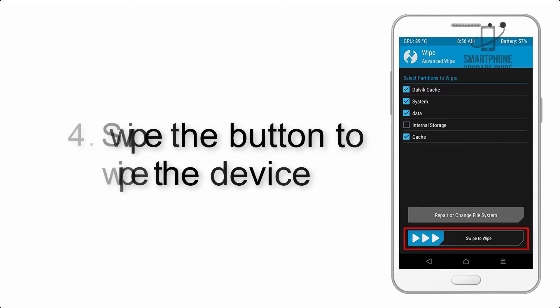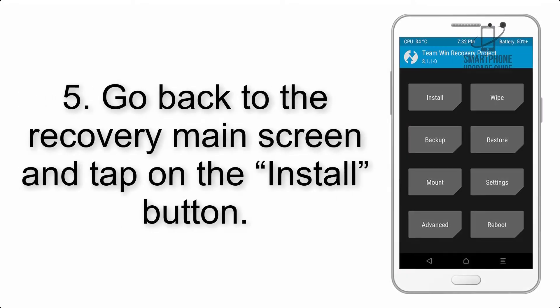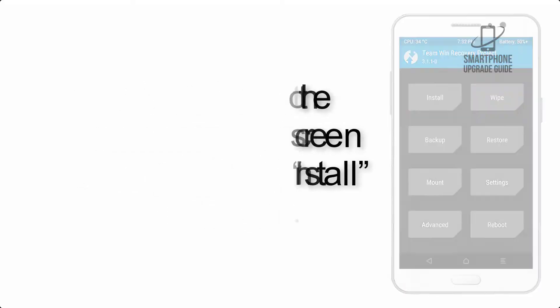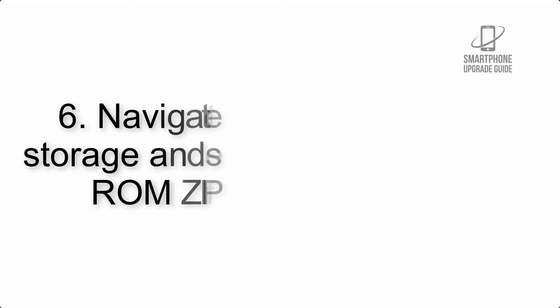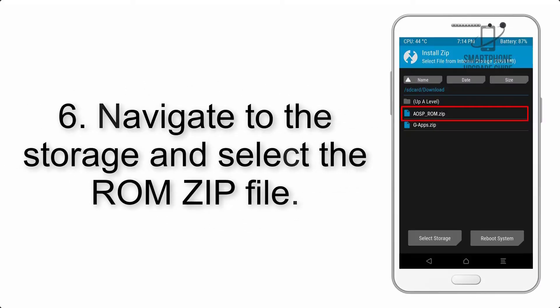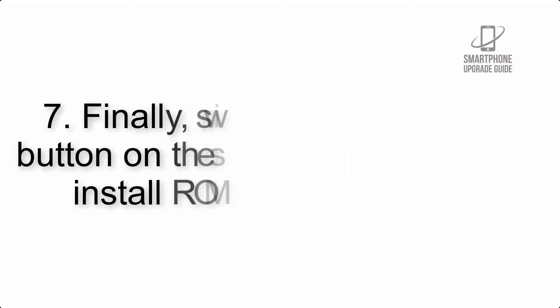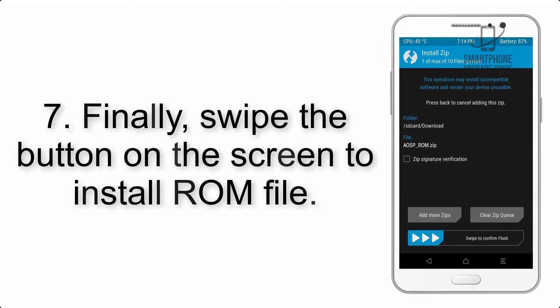Step 4: swipe the button to wipe the device. Step 5: go back to the recovery main screen and tap on the Install button. Step 6: navigate to the storage and select the ROM zip file.